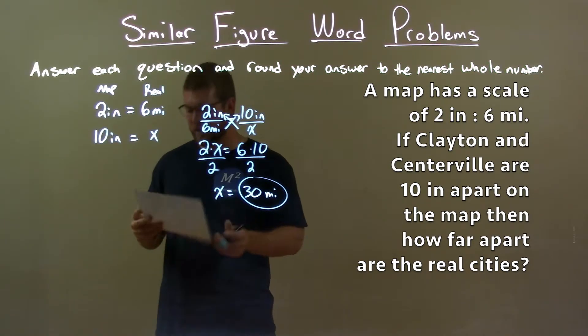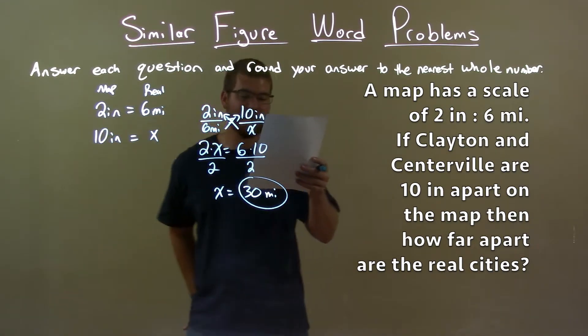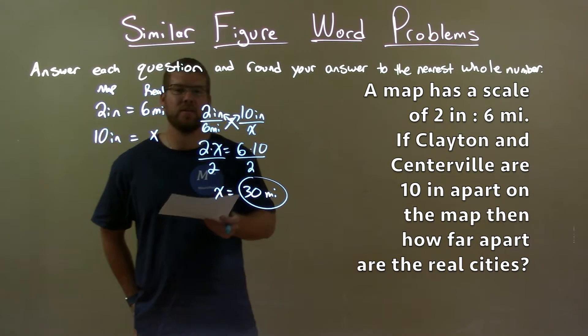So, we have a quick recap here. A map has a scale of 2 inches to 6 miles. If Clayton and Centerville are 10 inches apart on the map, then how far apart are the cities in real life?